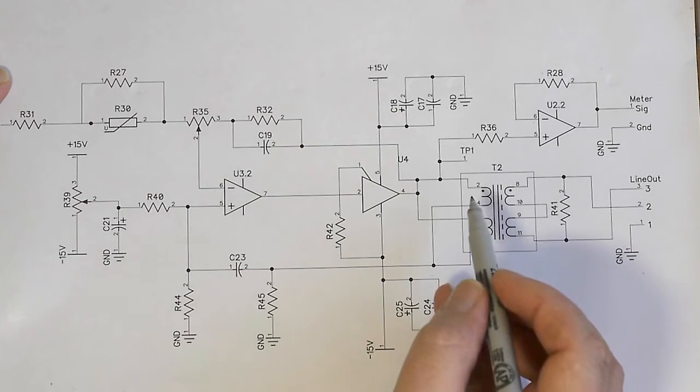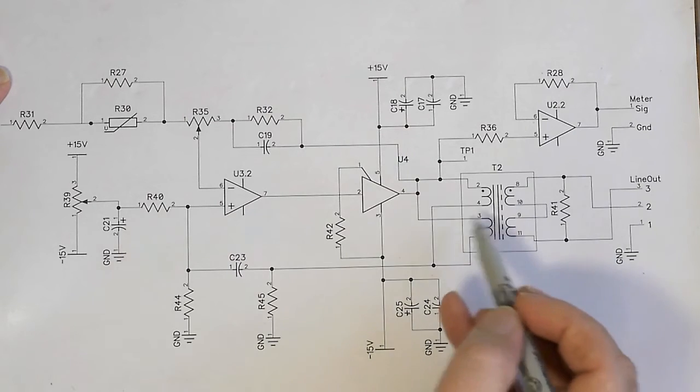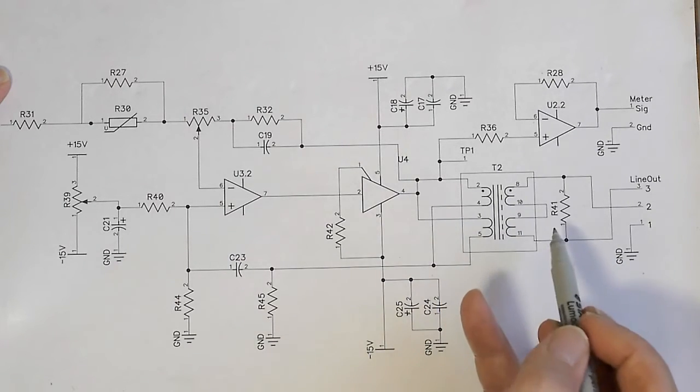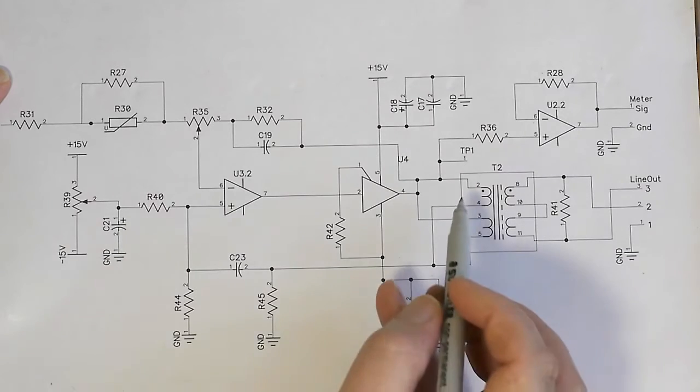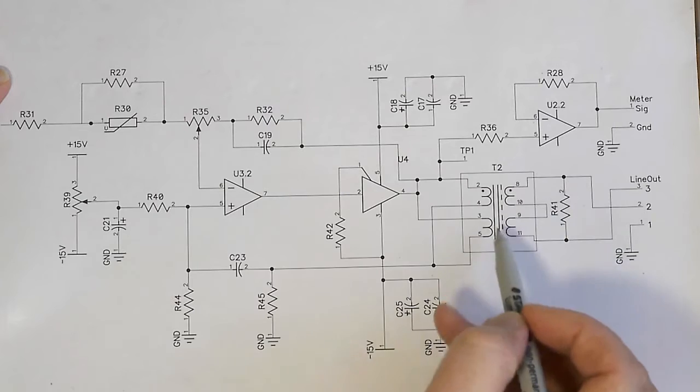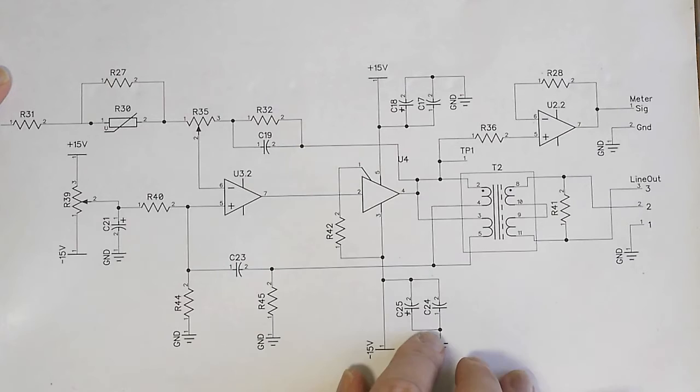Let's look at the transformer there, you see that we've got four split windings, split primary and secondary, and the way we've wired this up, we've got the primaries in parallel and the secondaries in series. So that effectively is a one to two step up.